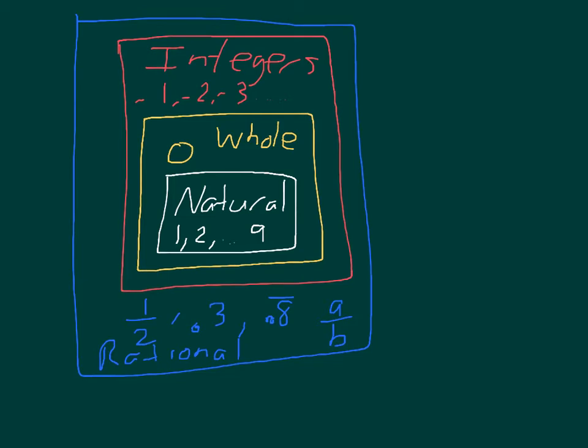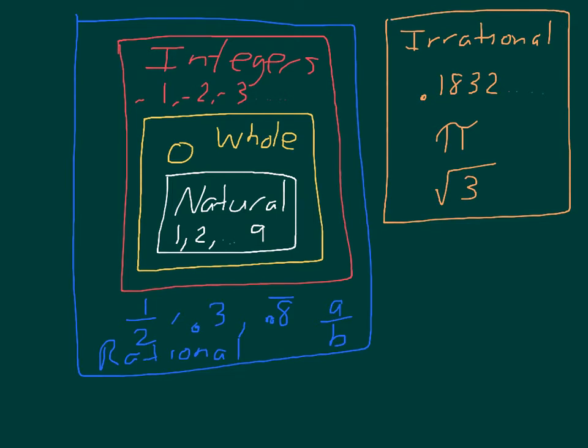Now, occasionally, they would come up with a number that wasn't rational, that couldn't be written as A over B. For example, 0.1832 and so on and so on. Or, everyone's favorite number, pi. Or, the square root of 3. These numbers, they didn't fit into the rational numbers. You can't write them as A over B. So, we called these numbers irrational. But, they didn't fit as part of the rational numbers. They were in this group out here all by itself. And, this was again known as the set of irrational numbers. Numbers that cannot be expressed as A over B.